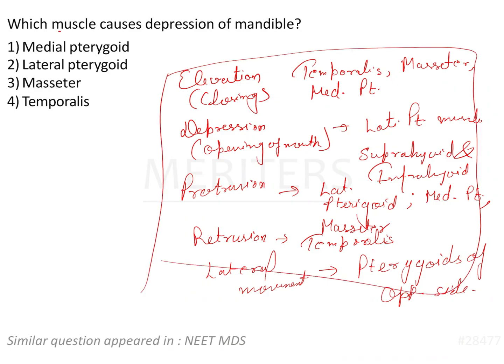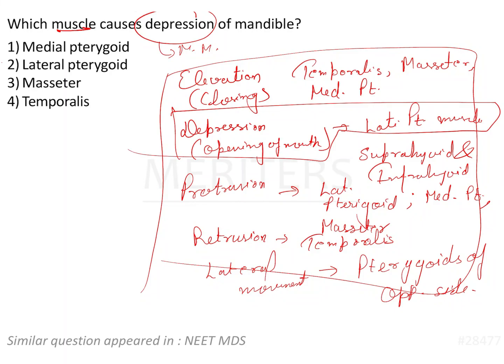Now let's come back to the question: which muscle causes depression of the mandible? Only one muscle of mastication performs depression, and that is none other than the lateral pterygoid muscle. So option two is the correct answer.